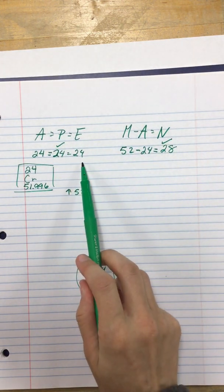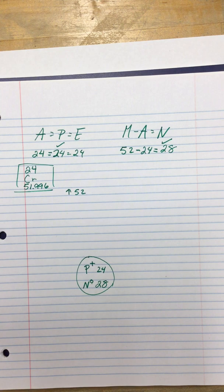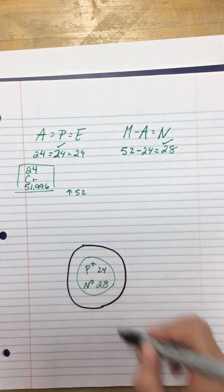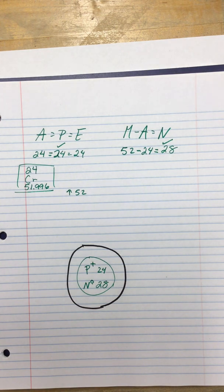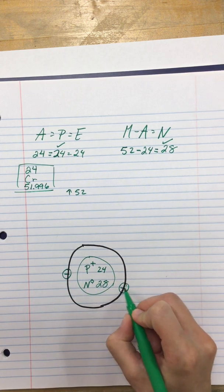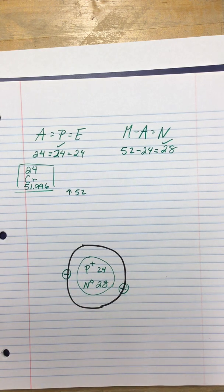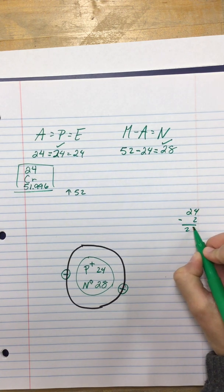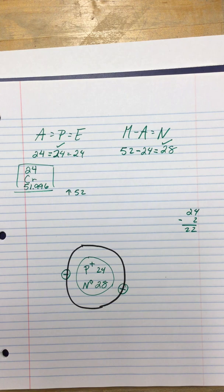I need to go back in and do my electrons. Remember that we start with the inner ring. I'm going to draw my inside ring first, and the inside ring can only hold two electrons. So, I'm going to draw my two negative electrons. I'm supposed to have 24. I've done two of them.